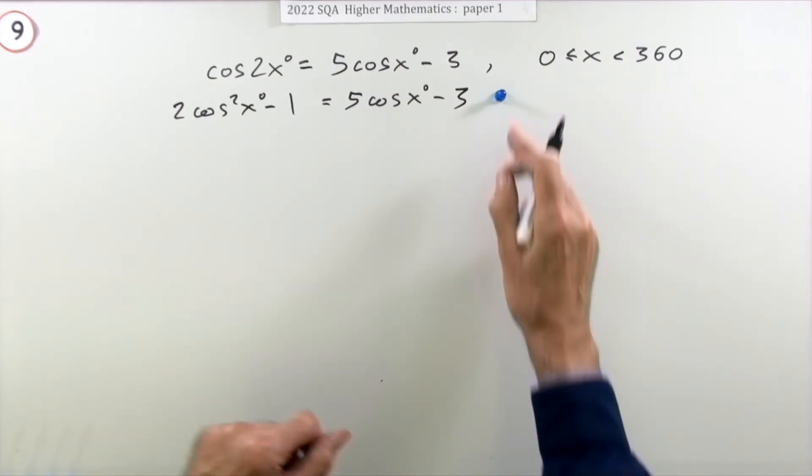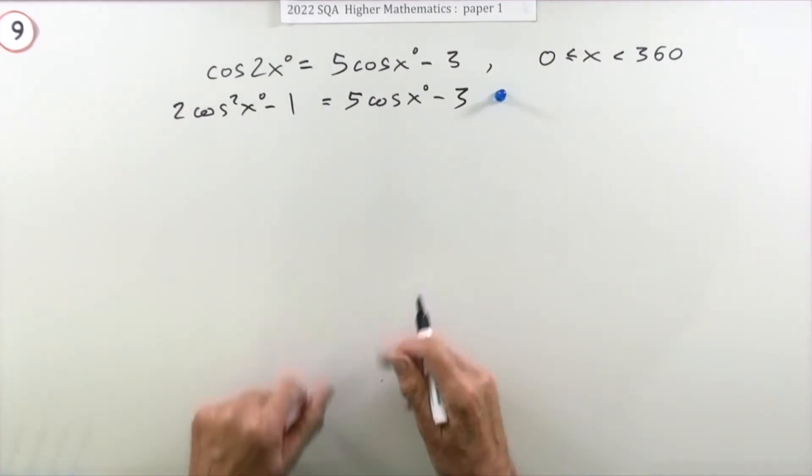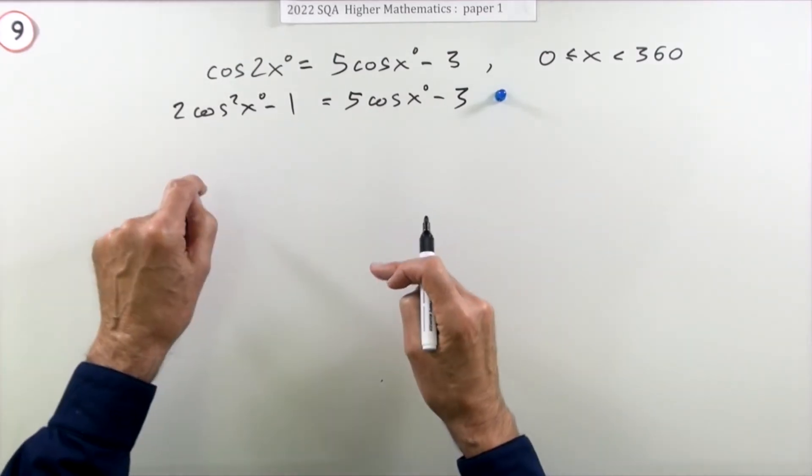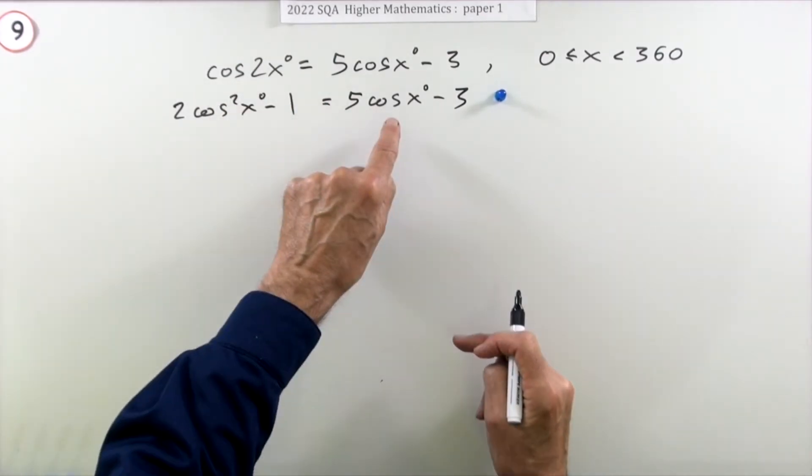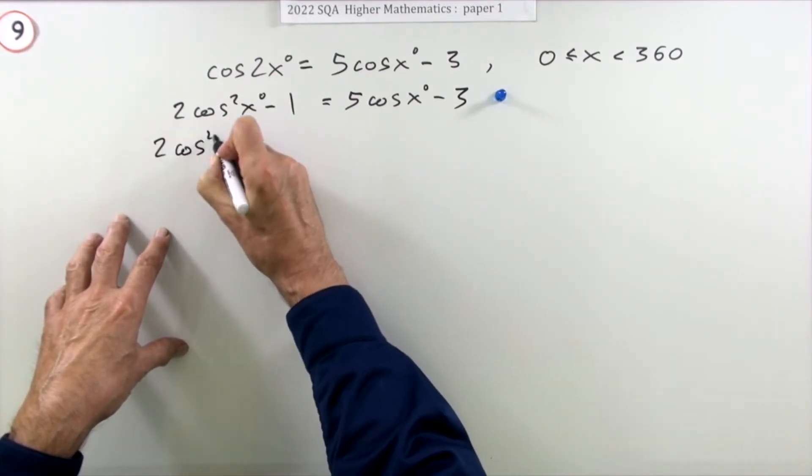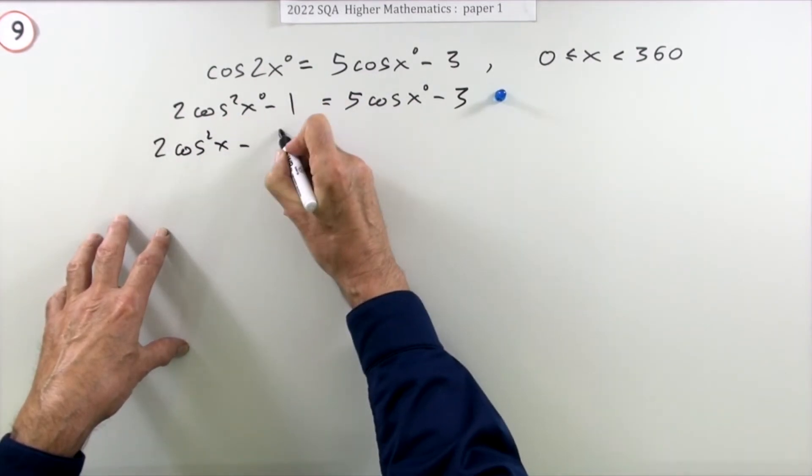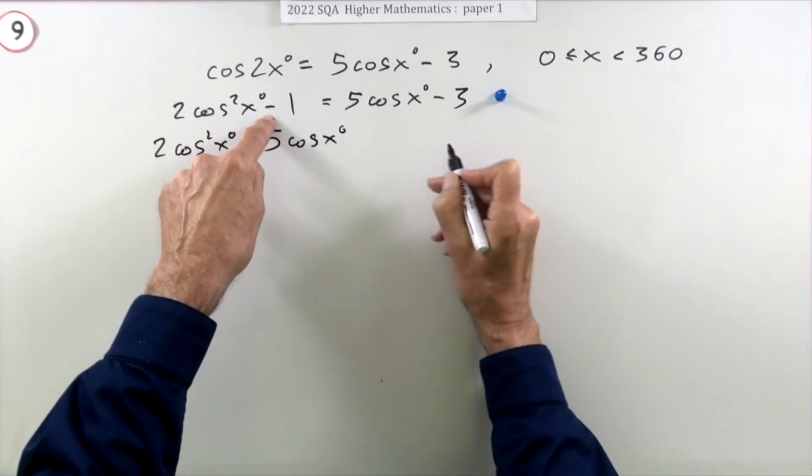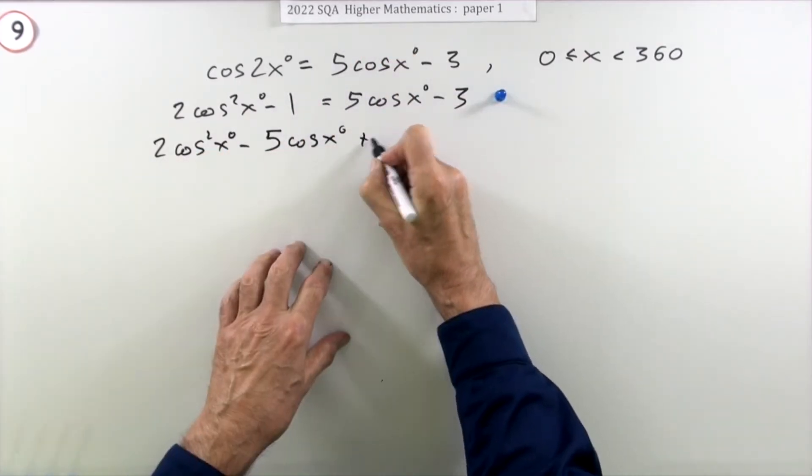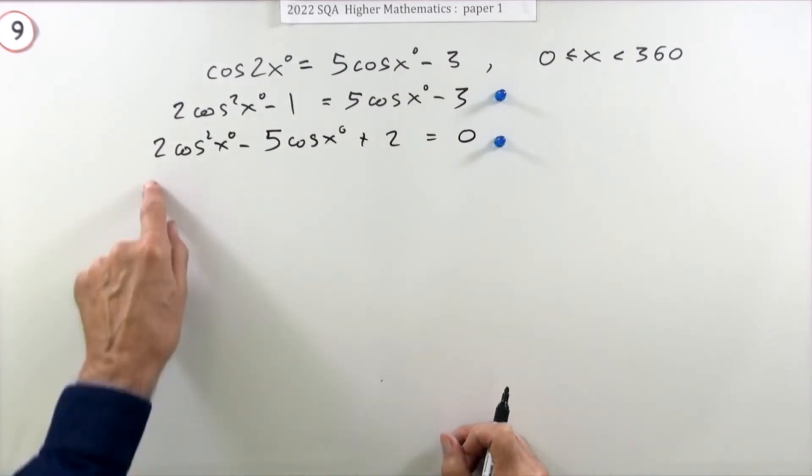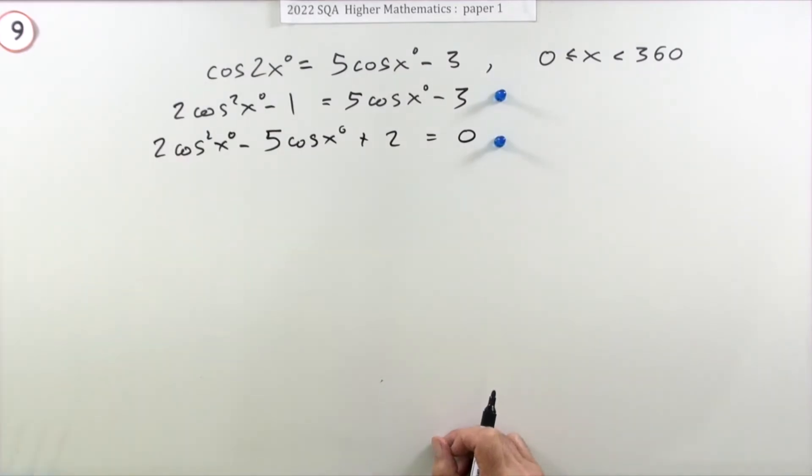Now rearrange that into a well-known phrase or saying. Obviously it's a quadratic because you've got squared terms and ordinary terms. So 2cos²x - 5cos x - 1 + 3 makes +2 = 0. Rearranging it into the standard quadratic form gets a mark.